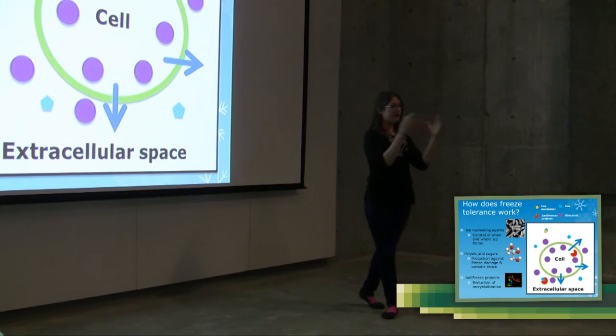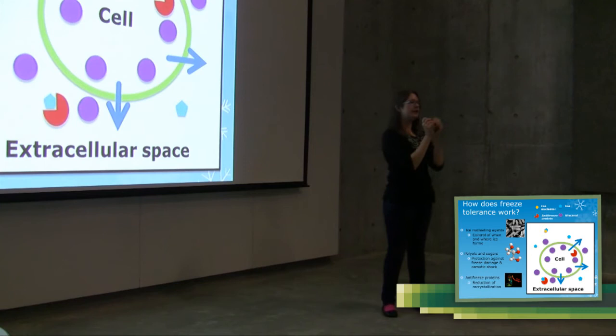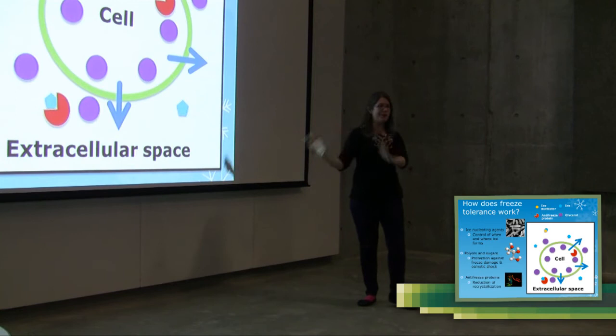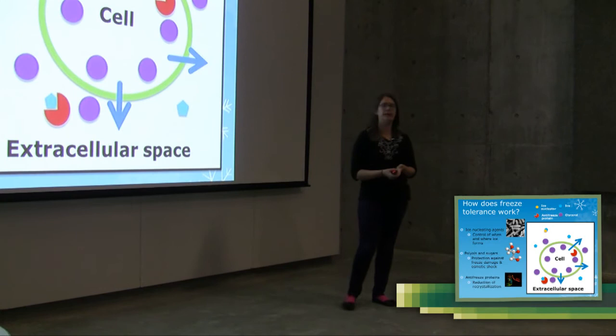And then finally many animals produce what are called antifreeze proteins. So what an antifreeze protein does is it's a very special kind of protein that can actually bind directly to ice. So I've got them here as little Pac-Man. They don't actually look like little Pac-Man but hopefully gives you an idea of how they work. And what they do is they keep those ice crystals nice and tiny and small so that they don't actually become large enough to cause mechanical damage.